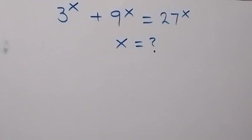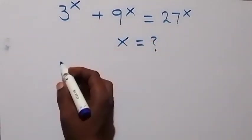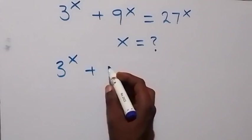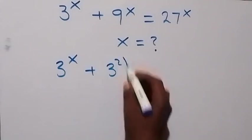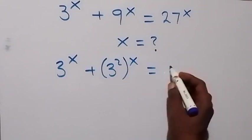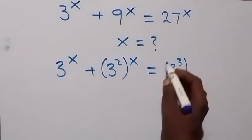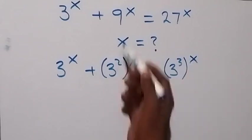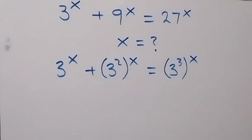Hello, you are welcome. We want to find the value of x in this exponential equation. Let's write this as 3 raised to power x, and 3 squared raised to power x equals 3 cubed raised to power x — so 9 and 27 rewritten as powers of 3.